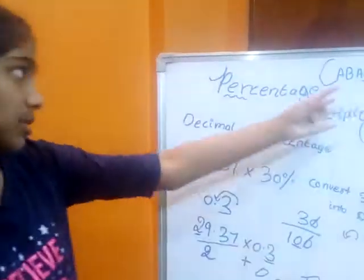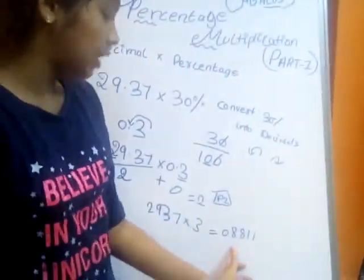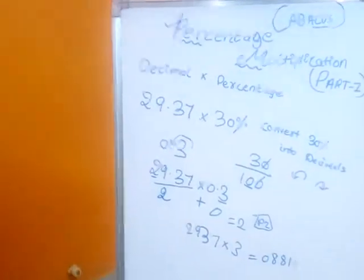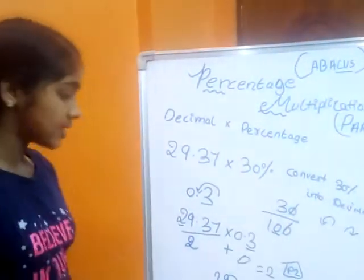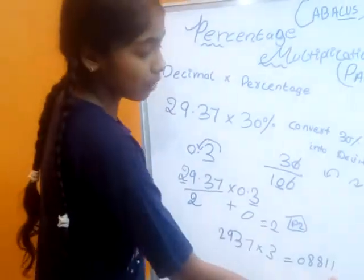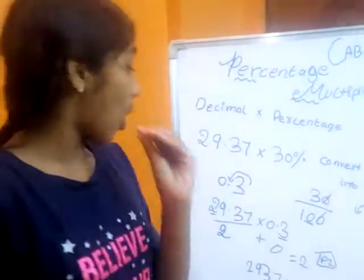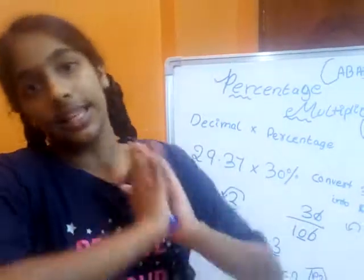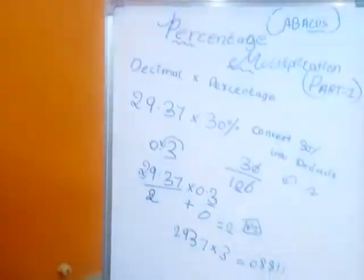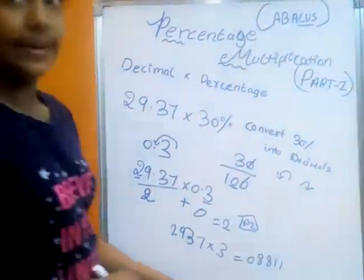One very important thing that everybody makes mistakes on in the Abacus method: we must and should take a 0 in front of the answer. Since 29.37 has 4 digits and 0.3 has 1 digit, we expect a 5-digit answer, but we only got 4 digits — 8811. So we keep a 0 in front: 08811. If we don't include this 0, the answer for decimal into percentage will be wrong.